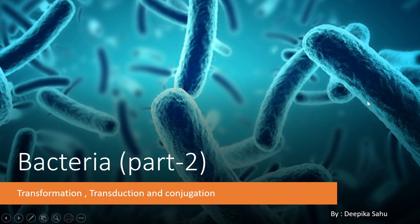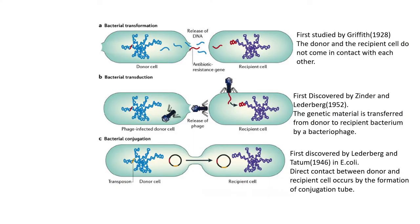Welcome to Biology with Deepika. In this video we will be learning about transformation, transduction, and conjugation in detail. The first type of genetic recombination in bacteria is bacterial transformation, which was first studied by Griffith in 1928. In this process, the donor and the recipient cell do not come in contact with each other.